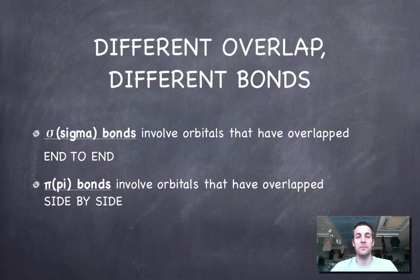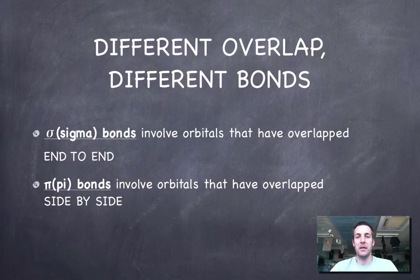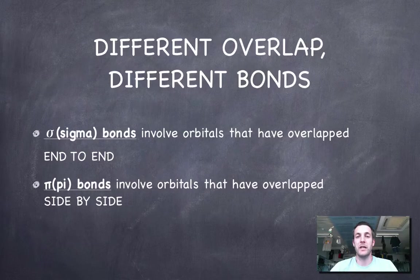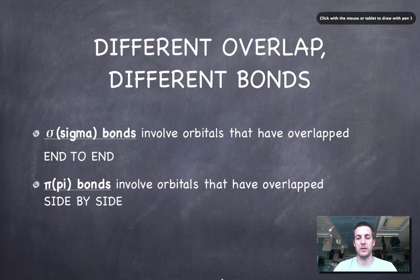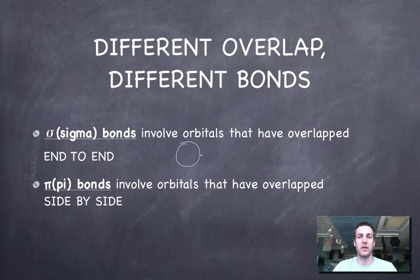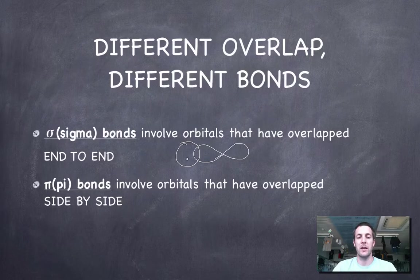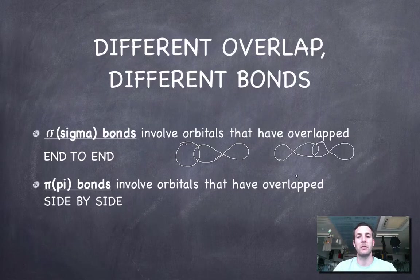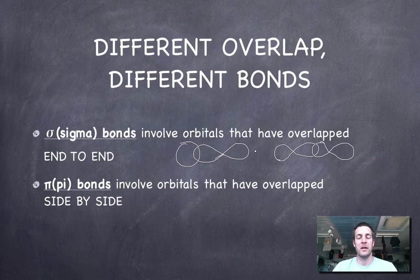When atoms share electrons and make bonds, what's actually happening is that their orbitals are overlapping. Depending on the symmetry involved in this overlap, we get different types of bonds. If two orbitals overlap end to end — for example, an s orbital overlapping with a p orbital, or two p orbitals overlapping in that direction, or hybrid orbitals overlapping end to end — that makes a sigma bond.